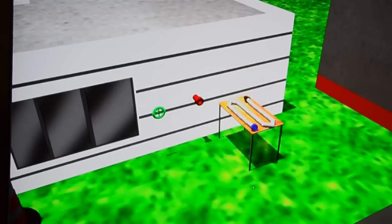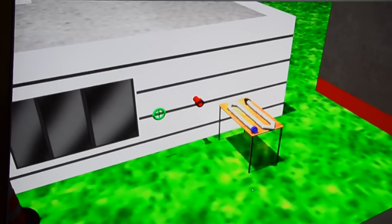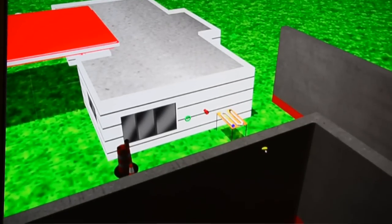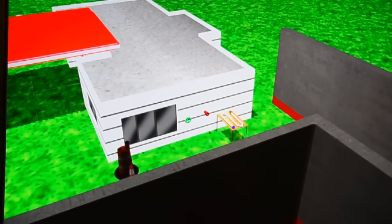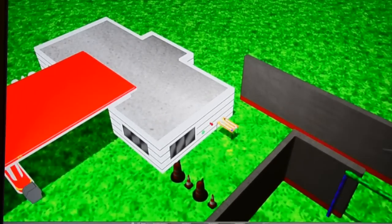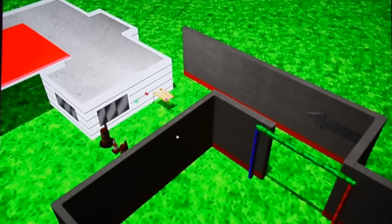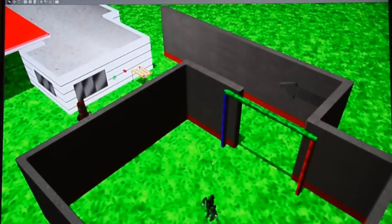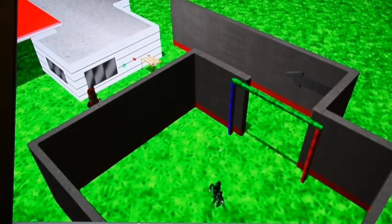The variations within the worlds can range from objects being placed in different locations to the road course changing to the steering wheel being wider or smaller. And the variations in this world may include the hose in a different location, the valve is harder to turn on, or you need more rotations, things of that nature.